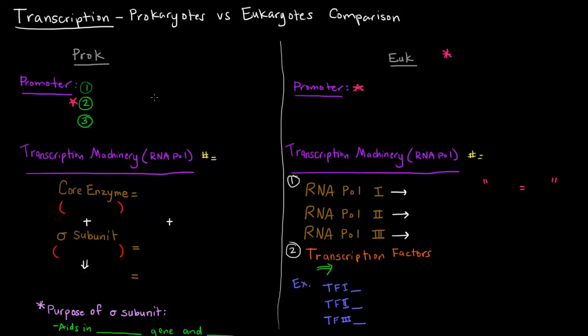So in prokaryotes, their promoter regions have three specific thematic regions. Those regions are the negative 35 region, the negative 10 region, which actually has a specific name called the Pribnow box, and the third region is the plus one region, which is the transcription start site.